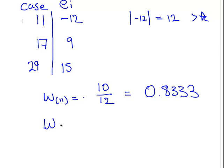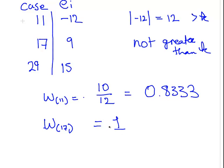Weighting for case 17: we consider it quite high, but not greater than 10, not greater than the tuning constant. So we leave it alone, it just stays as 1. It's high, but it's not too high, it's not greater than K.